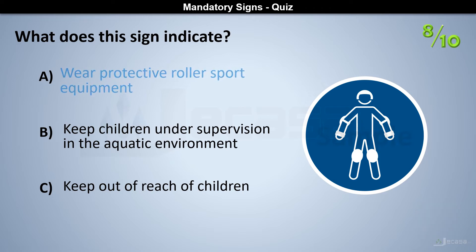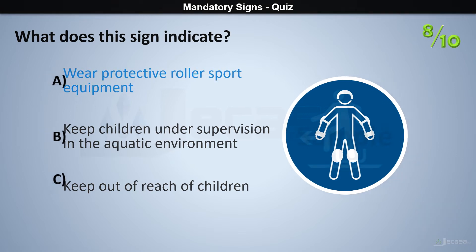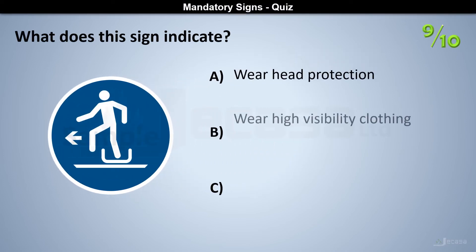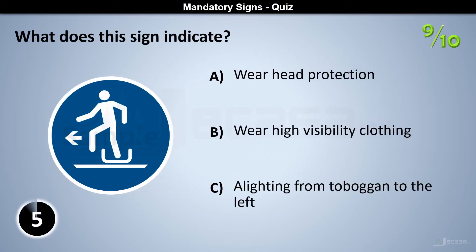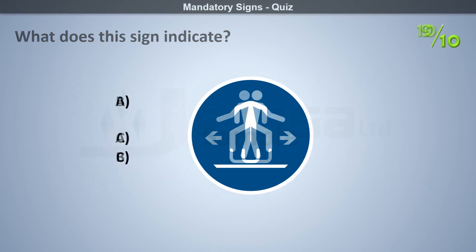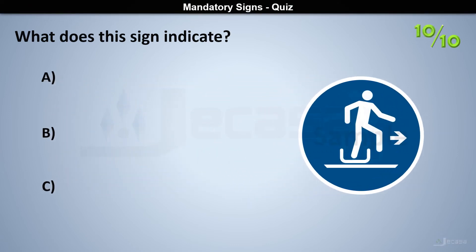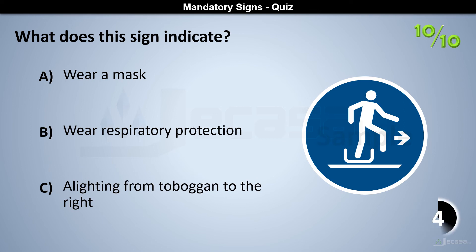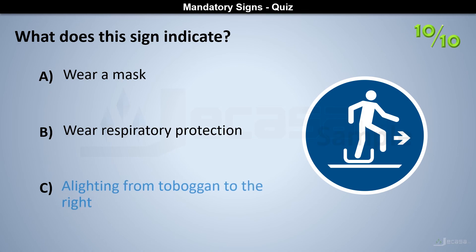Wear protective roller sport equipment. Alighting from toboggan to the left. Alighting from toboggan to the right.